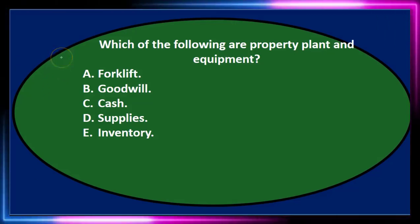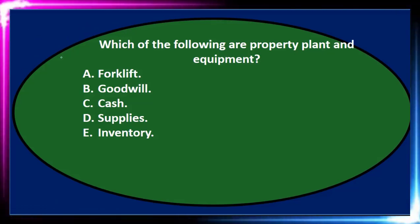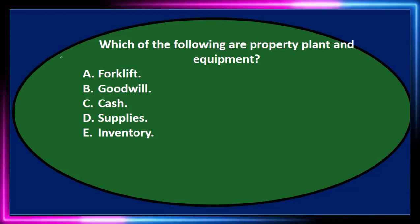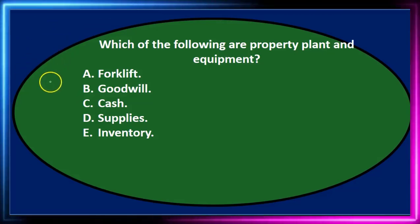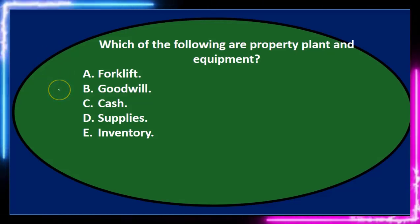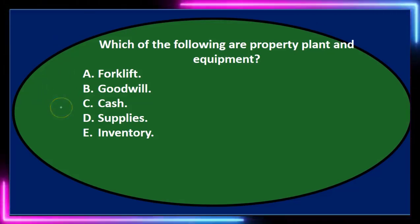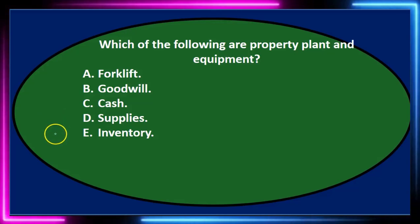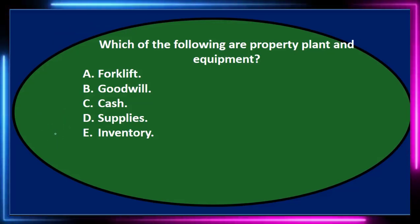First question: which of the following are property, plant, and equipment? A. Forklift. B. Goodwill. C. Cash. D. Supplies. E. Inventory.